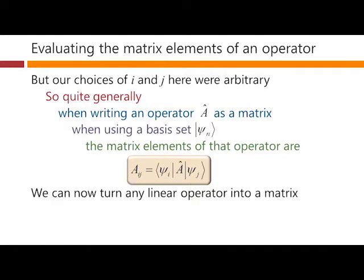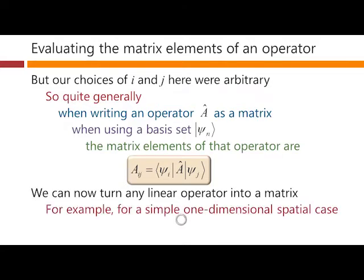For example, we can now use this to turn any linear operator into a matrix. And the simple one-dimensional spatial case would give us this actual expression for what aij is. This is the same thing as the bracket version up here just written out now as an integral if we happen to have a one-dimensional spatial function.